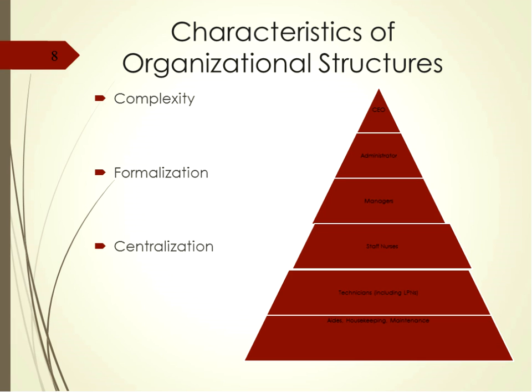Organizational designs are often classified by characteristics such as complexity, formalization, and centralization. Complexity concerns the division of labor, how specialized that labor is, the number of hierarchical levels, and the geographic dispersion of units. An organizational chart is a graphic representation of the work unit and reporting relationships. Hierarchy refers to the lines of authority and responsibility, including how distant the bedside nurse is from the chief nursing officer and chief executive officer.